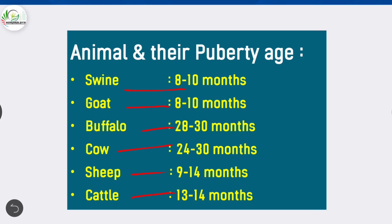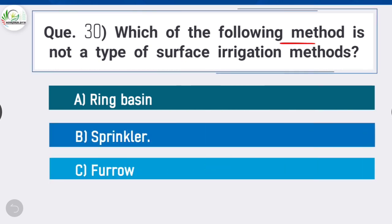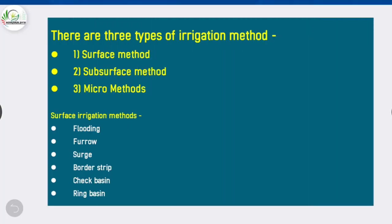Question 30: Which of the following methods is not a type of surface irrigation method? Option B is correct: sprinkler. Sprinkler is a type of micro-irrigation method. There are three types of irrigation methods: surface method, subsurface method, and micro-methods. Surface irrigation methods include flooding, furrow, surge, border strip, check basin, and ring basin.